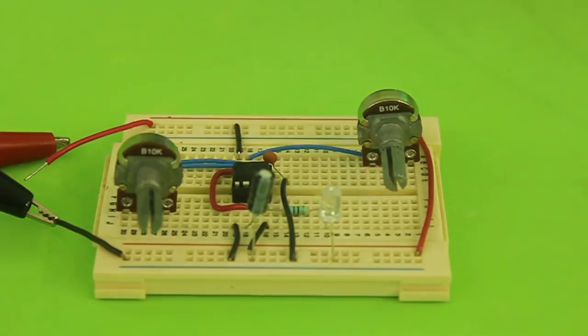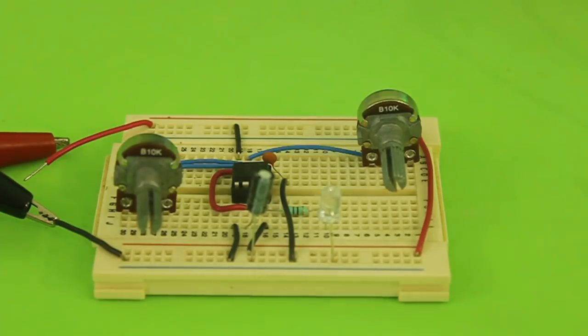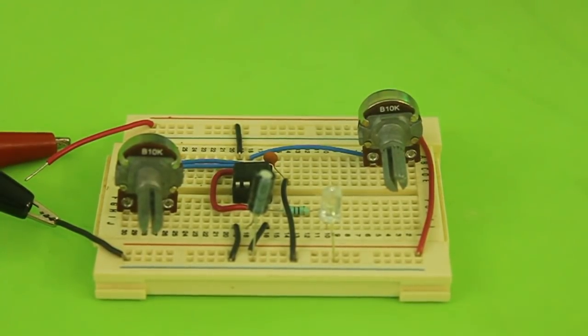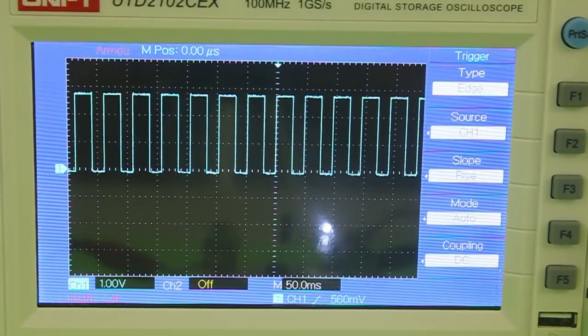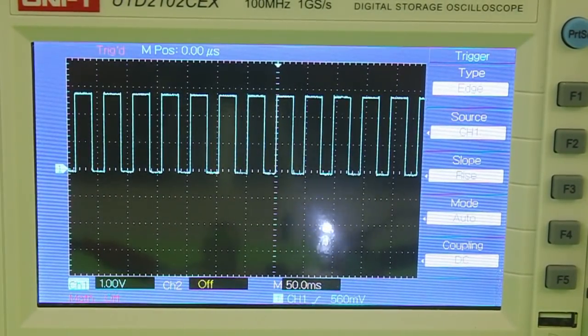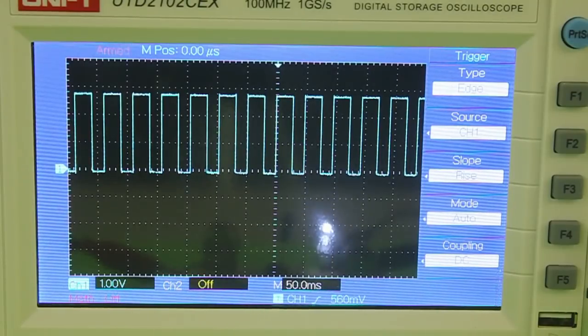This IC is a timer circuit, which means that it can produce pulses of current. It has two modes of operation: the monostable mode that produces a single pulse of current, and the astable mode, which we will talk about in this video, that produces a train of pulses, as we can see in the oscilloscope screen.